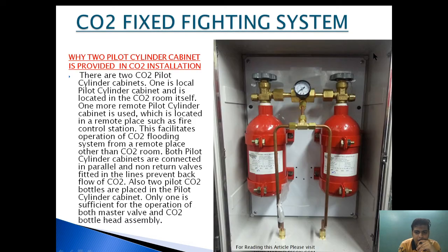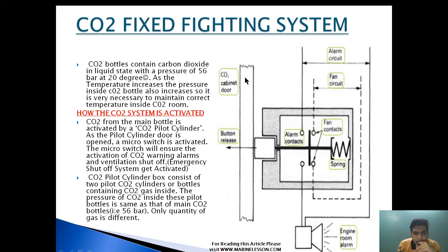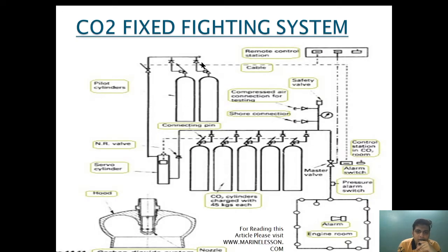The door of the CO2 pilot cylinder is provided with an alarm contact. When the door is closed, the alarm contacts are not connected. When the door is opened, through a spring mechanism this contact will be made. As soon as the alarm contact is made, an alarm circuit activates and an engine alarm indicates that the CO2 pilot cylinder door has been opened. The fan contact will also be disconnected and the fan of the engine space will be switched off.